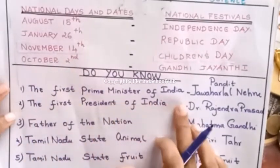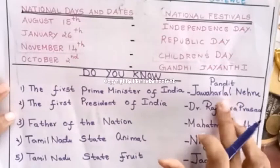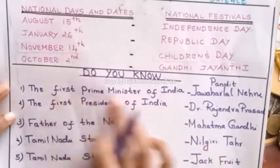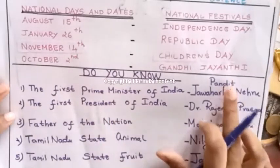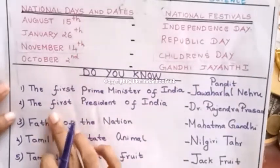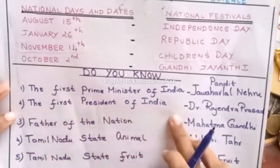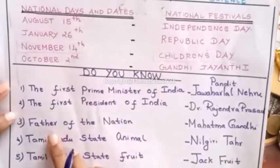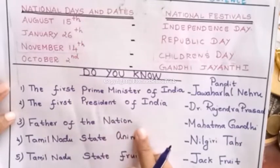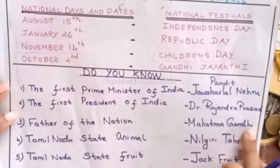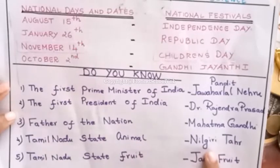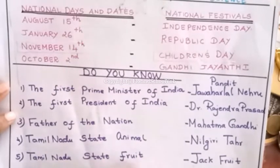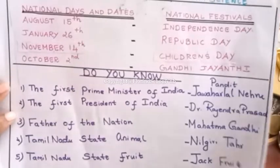Who is the first Prime Minister of India? Pandit Jawaharlal Nehru. Who was the first President of India? Dr. Rajendra Prasad. Who is the father of our nation? Mahatma Gandhi. Tamil Nadu's state animal is Nilgiri Tahr. Tamil Nadu's state fruit is jackfruit.